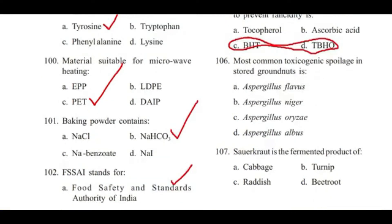Question 106: The most common toxicogenic spoilage in stored groundnuts is caused by — Aspergillus flavus, Aspergillus niger, Aspergillus oryzae, or Aspergillus albus? Answer is A, Aspergillus flavus.